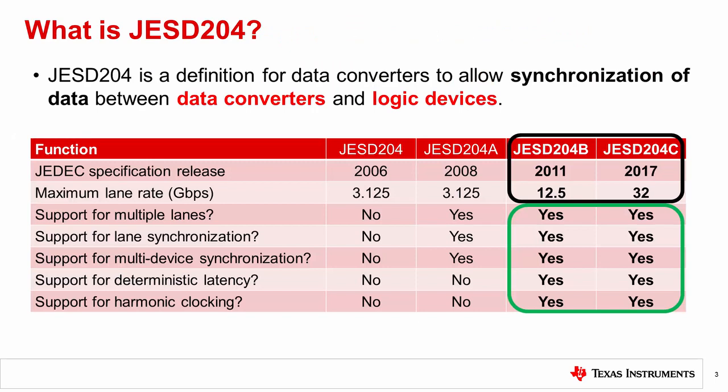What is JESD204? It's a standard to enable a serialized interface between data converters and logic devices such as FPGAs or ASICs. From the revision B release, there was a major step forward when the standard added support for deterministic latency. We will use the term JESD204B to refer to both B and C, as the clocking requirements are consistent between the two. JESD204C allows for increased data lane rates, but otherwise B and C are the same for clocking considerations.